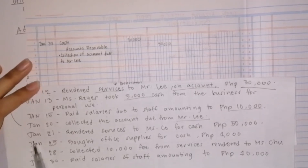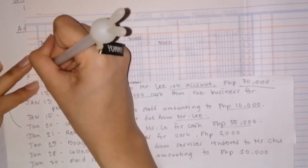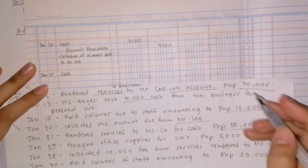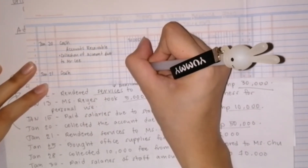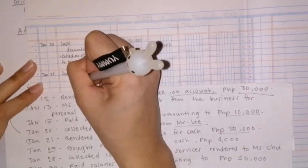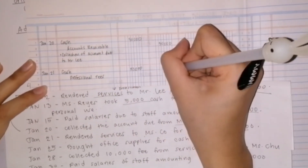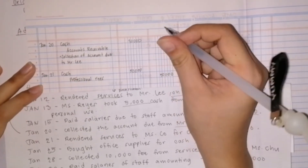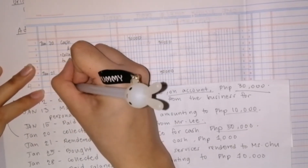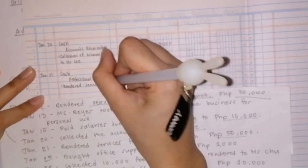Next, on January 21, she rendered services to Misco for cash amounting to fifty thousand. We record a debit to cash since the customer already paid, amounting to fifty thousand. Since the service is already rendered, we credit an income account — professional fees — amounting to fifty thousand as well. The explanation: to record rendered service to Misco.